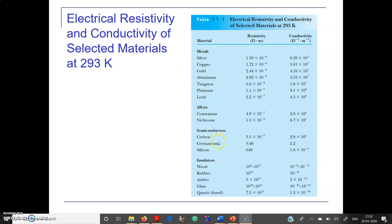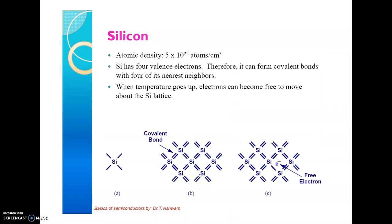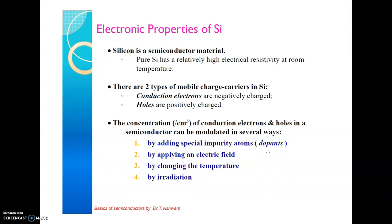Based on resistivity, we can define semiconductors as having intermediate resistivity values. Silicon has an atomic density of 5 times 10 to the power of 22 atoms per centimeter cube. Silicon has four valence electrons and forms covalent bonds. When temperature increases, there is a possibility of breakage of covalent bonds, resulting in generation of electron-hole pairs. The pure silicon has higher electrical resistivity at room temperature.